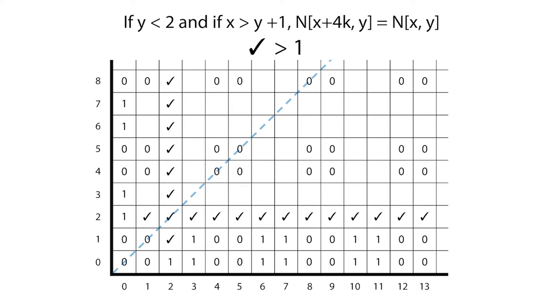We now notice that for the rows we've labeled zero and one, if we're located more than one square past the diagonal, then the row is periodic, with period four. The ones on row two can also be reflected across the diagonal.